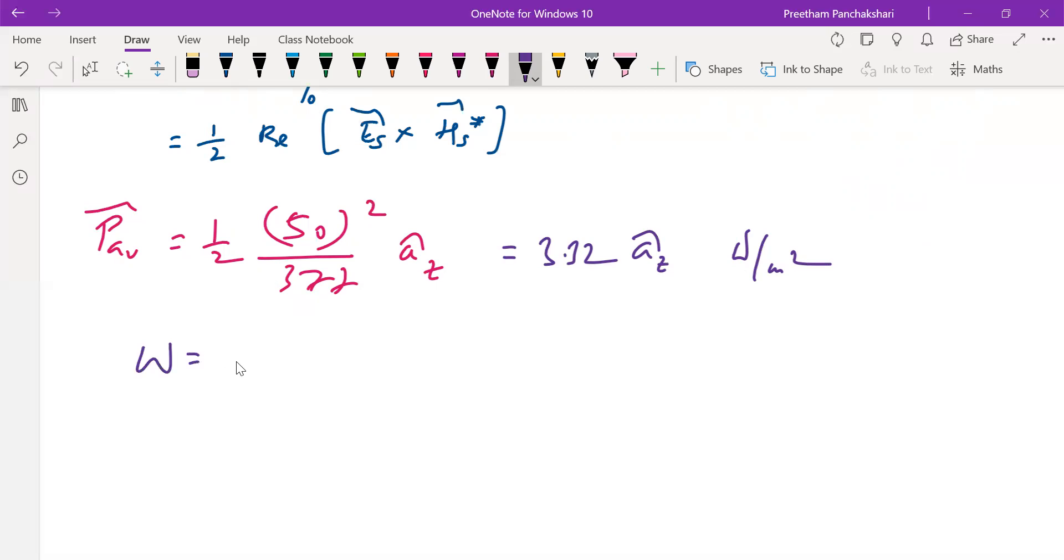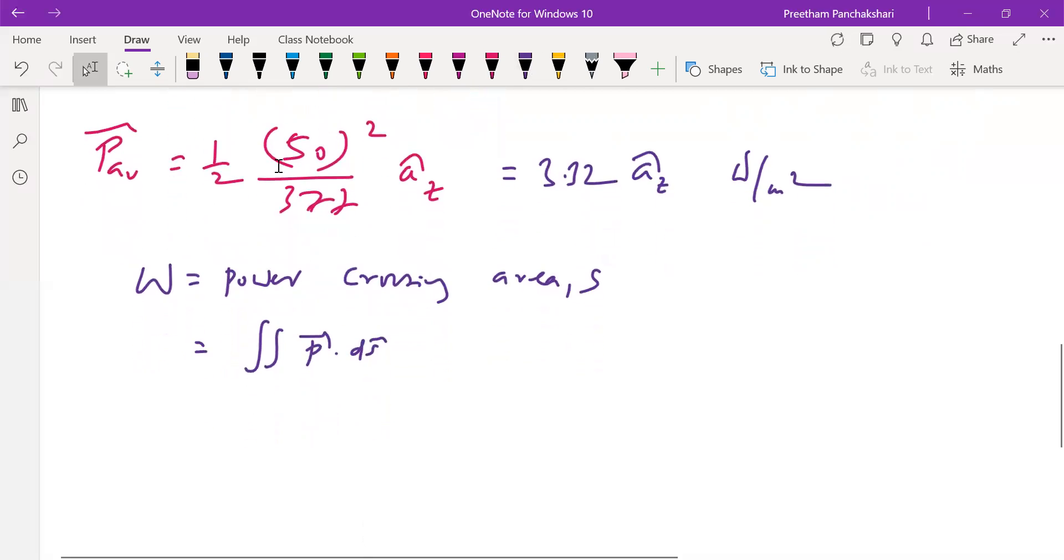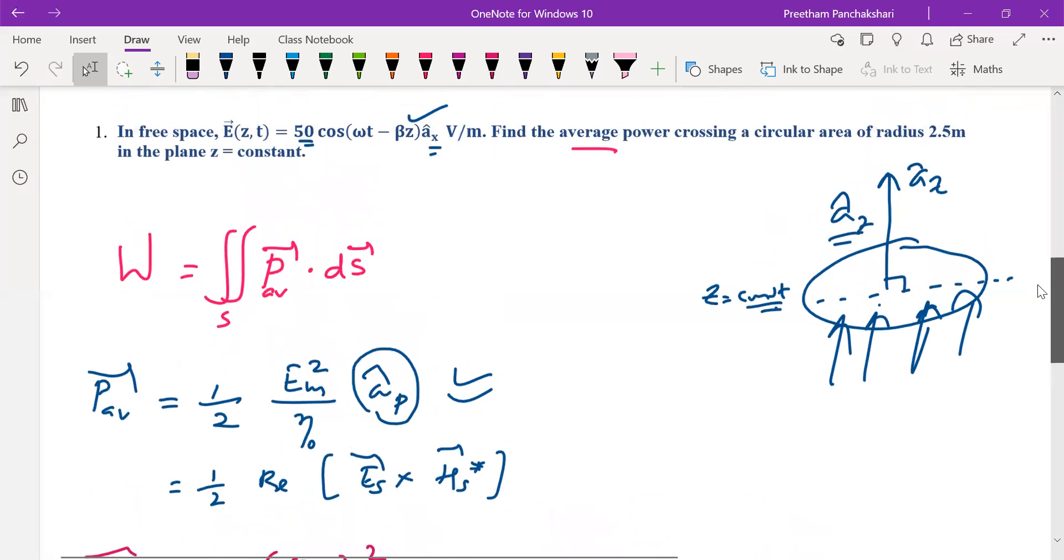So now I would like to find total power crossing some area, let us say s. As I said it is given by P dot ds. P dot ds. P in this case is average power because we want average power crossing, so average Poynting vector which is already calculated here 3.32 a cap z.